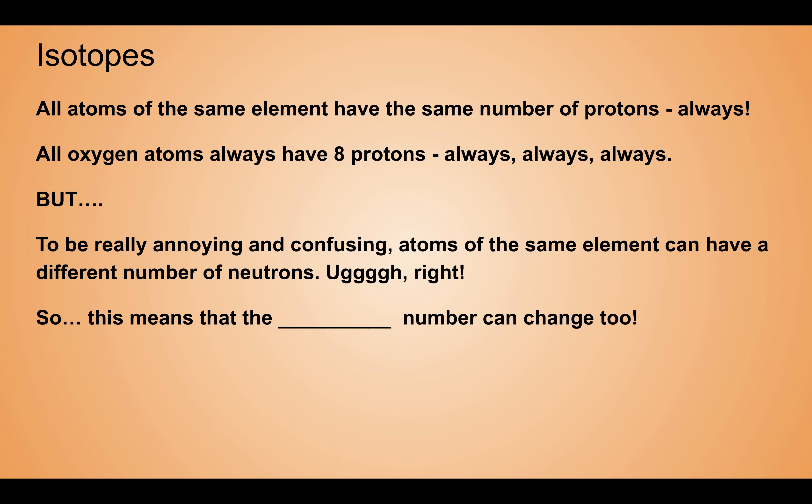Okay, isotopes. So this part confused a lot of you guys and I know it sucks, I'm sorry it's super inconvenient. You would think that the laws of the universe would be super ordered, but we have isotopes to account for. Basically, all isotopes are different atoms of the same element that have a different number of neutrons.